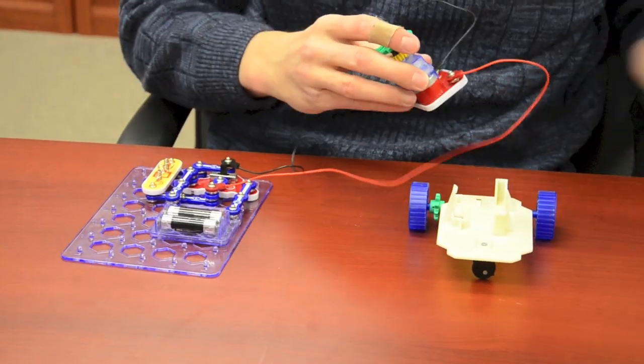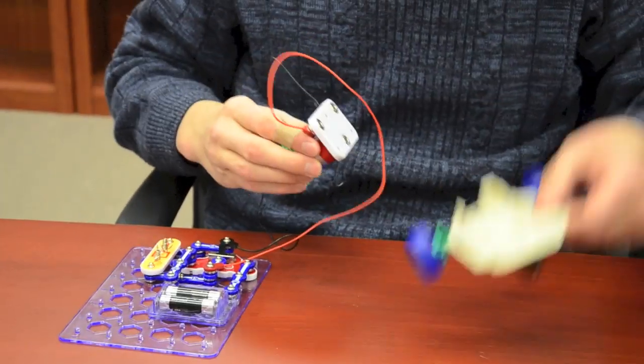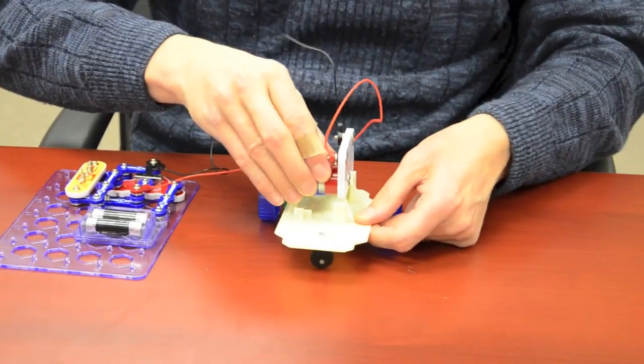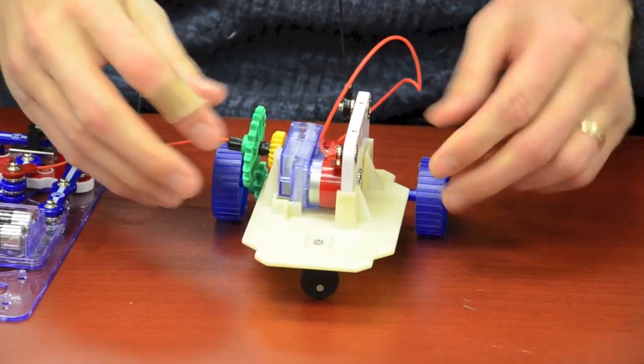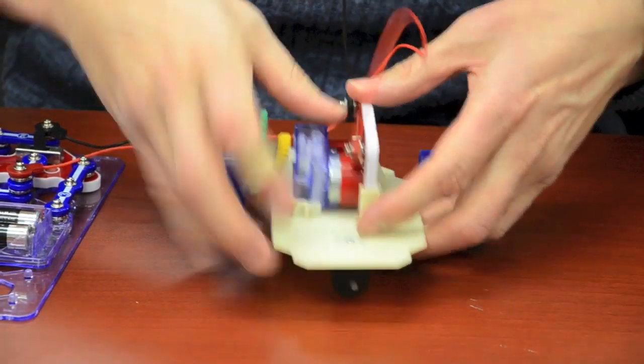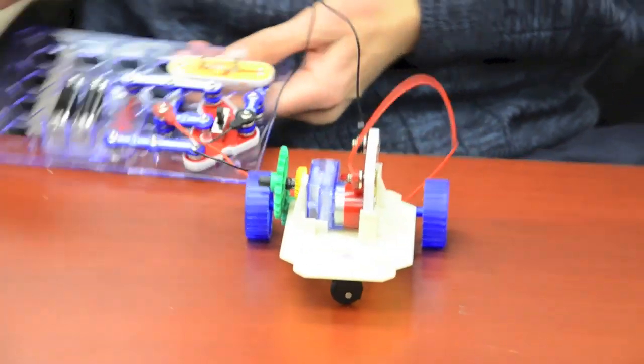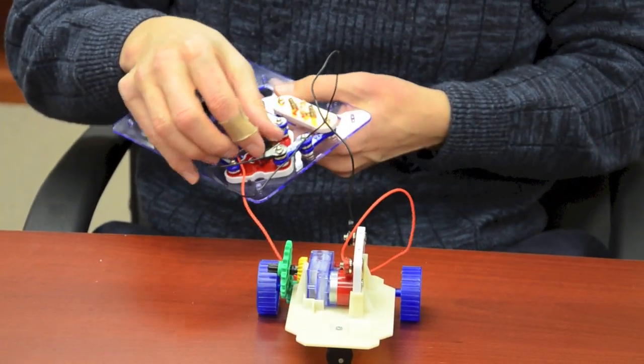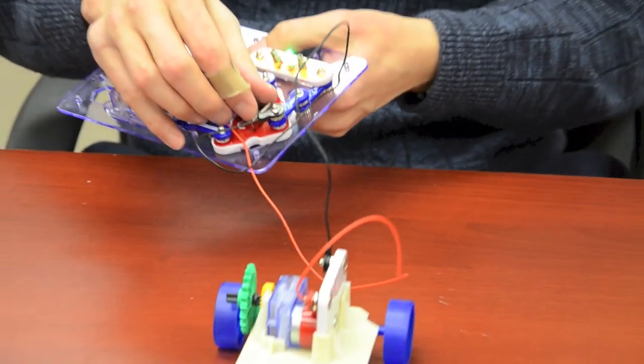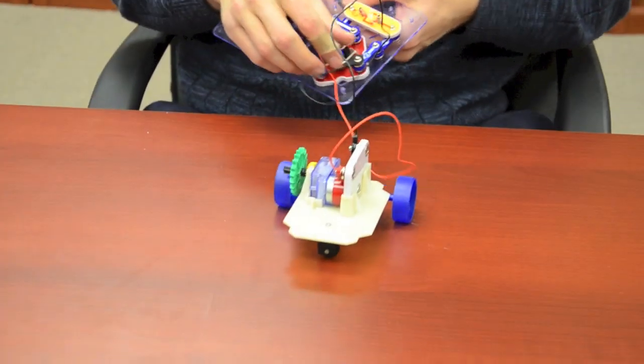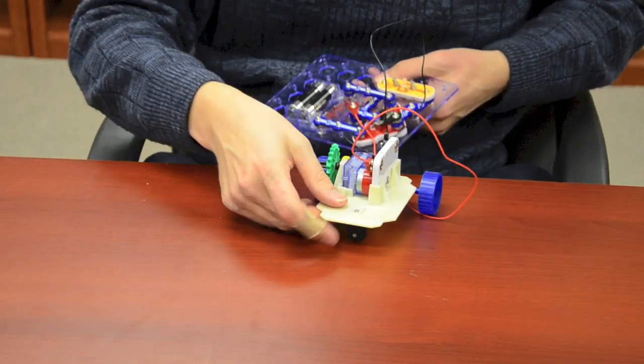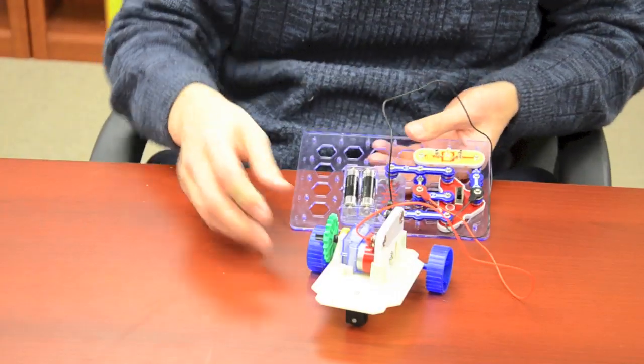The gearbox can be removed and inserted into our miniature car like this. Make sure it's down all the way. We have our controlling circuit so you can make it go forwards and backwards. It also turns, but doesn't demonstrate well on this table.